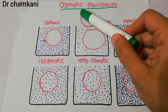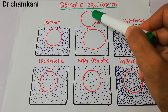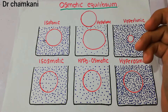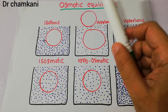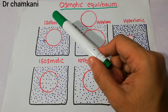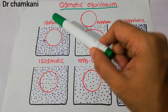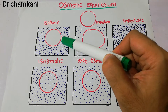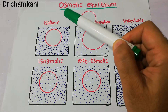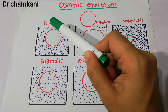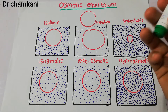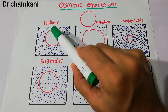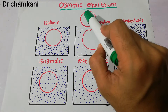Suppose this is a cell of a human body having a normal size and shape. If we put it in a fluid which is isotonic, it simply means that this fluid has the same concentration as the fluid inside the cell. Iso means same, and tonicity refers to the osmolarity or concentration of the fluid. So this isotonic fluid has the same concentration as the fluid inside the cell.